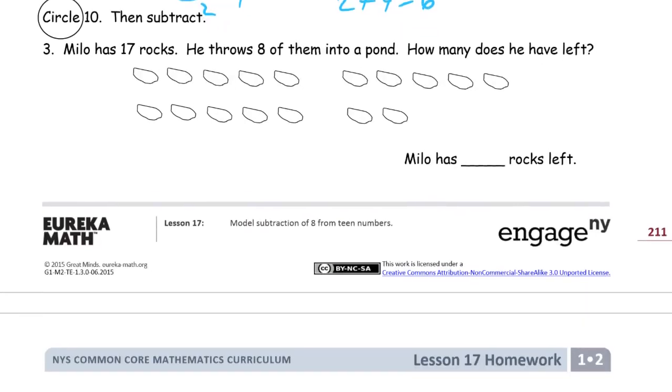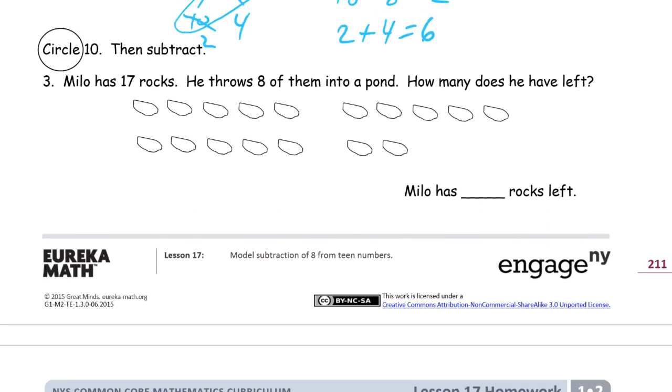Now we're circling 10 and subtracting. So Milo has 17 rocks. He throws 8 of them into a pond. How many does he have left? So circling 10, there's our 10 frame right there. Or you might see 2 five groups and a row of 10 at the top. Either one will work because it's just a 10.